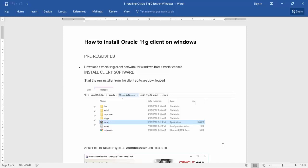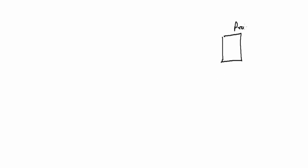But first, before we get into configuration of the networking, we need to understand something called Oracle client. Now what is a client? Assume that we have our database server — this is the database server where proddb is running, or our production database is running. And this is our application server.